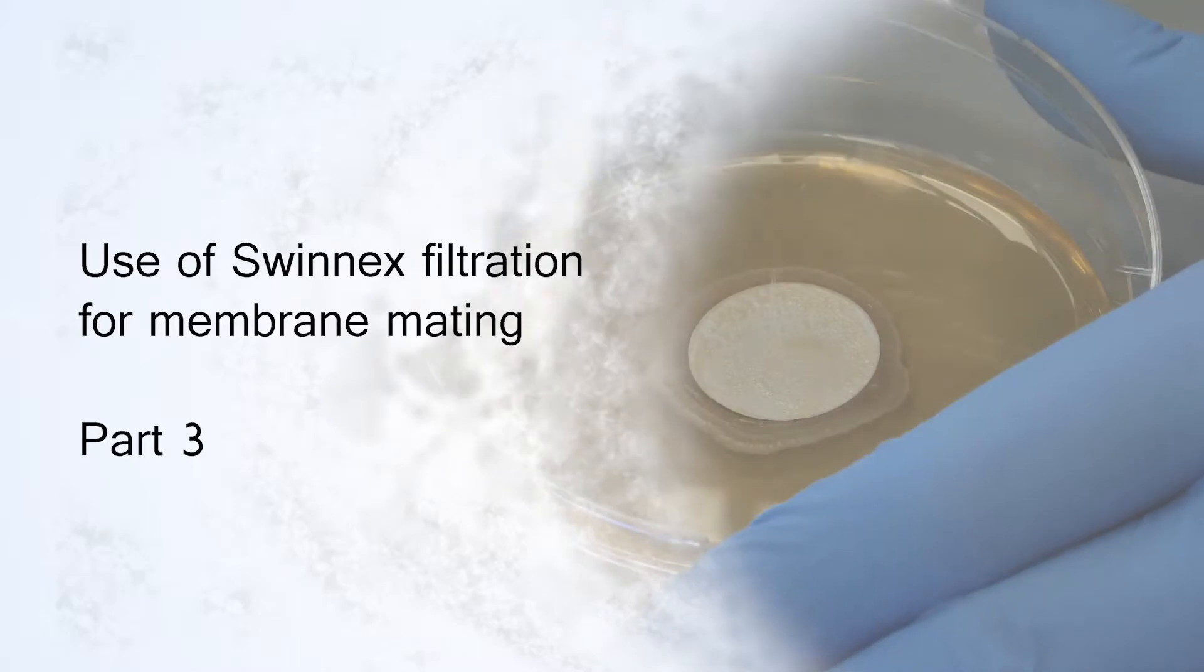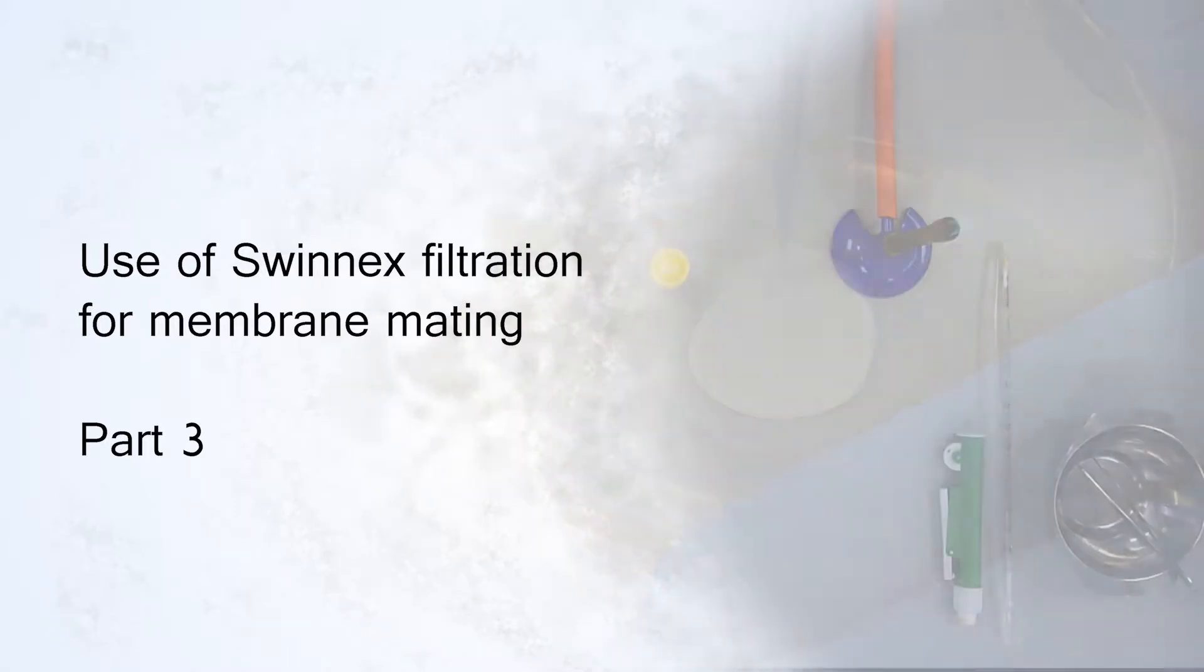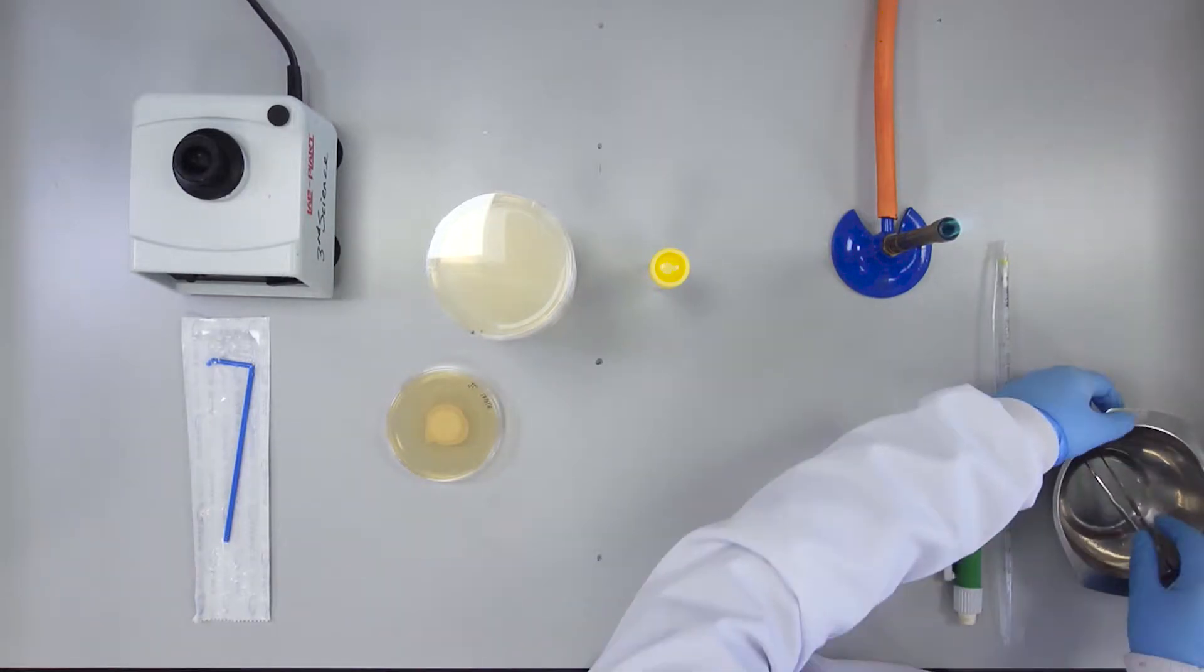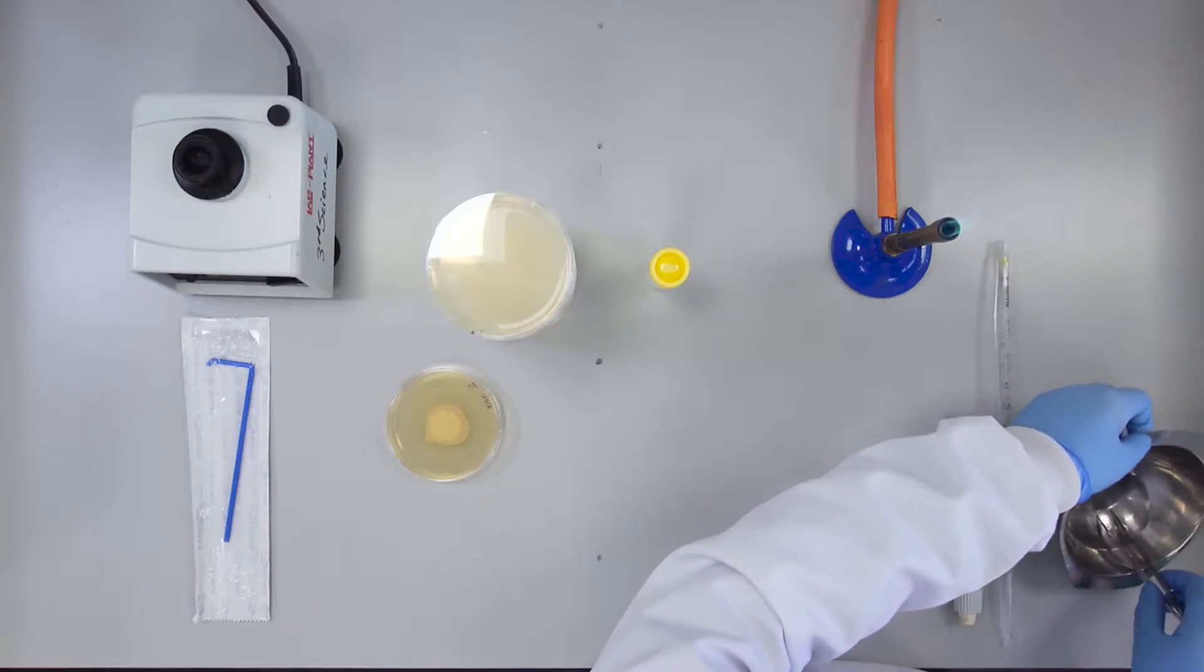Use of Swinex filtration for membrane mating, Part 3: Isolation of transconjugants. After incubation of the mating membrane on TSA, the next step is to isolate transconjugants.